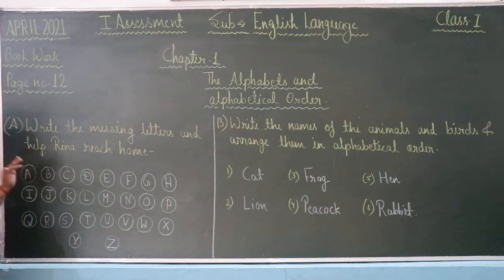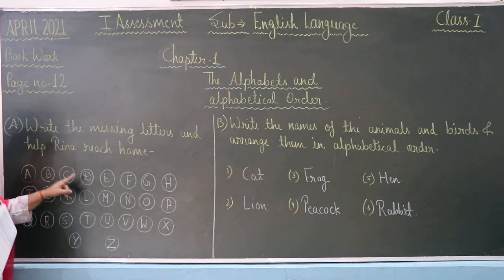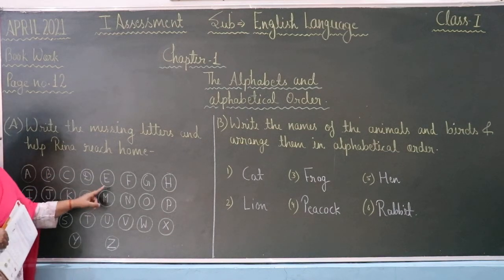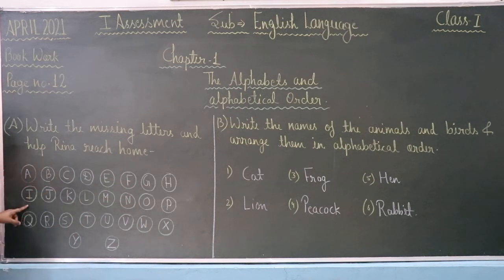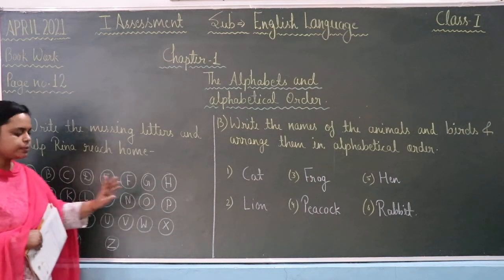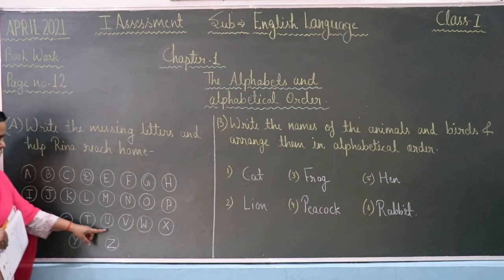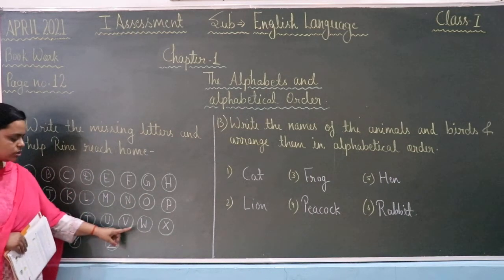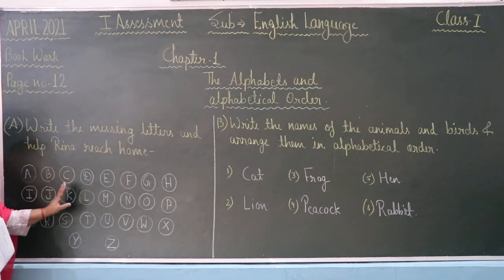And the alphabetical order is as follows: A, B, C, D, E, F, G, H, I, J, K, L, M, N, O, P, Q, R, S, T, U, V, W, X, Y, and Z. That is your alphabetical order.